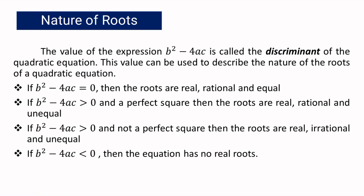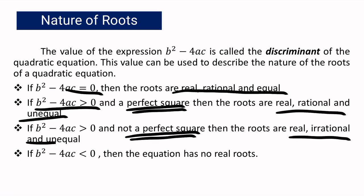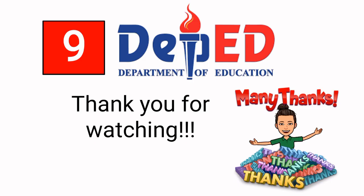To summarize: the value of the expression b squared minus 4ac is called the discriminant, and it tells us the description or characteristic of the roots. If it equals 0, the roots are real, rational, and equal. If it is greater than 0 and a perfect square, the roots are real, rational, and unequal. If it is greater than 0 but not a perfect square, the roots are real, irrational, and unequal. And if the discriminant is less than 0, the roots are unreal and unequal. This is Mom Sheila — that's it for today. Thank you for watching.